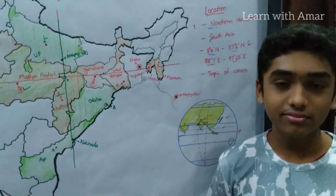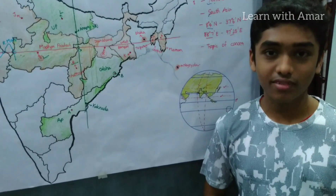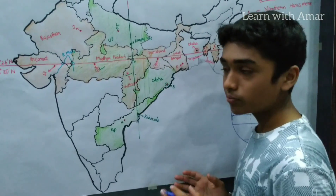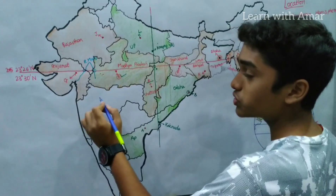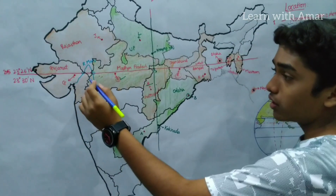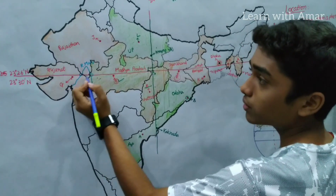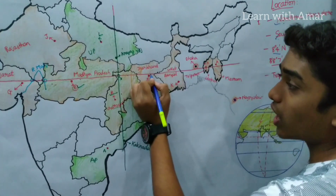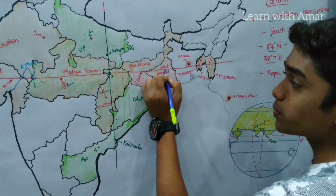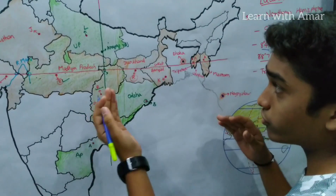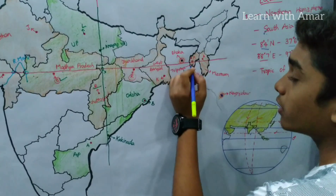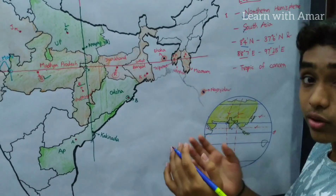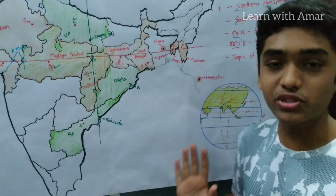How many states are there through which the Tropic of Cancer passes? The Tropic of Cancer passes through 8 states in India, which are Gujarat, Rajasthan, Madhya Pradesh, Chhattisgarh, Jharkhand, and West Bengal — located to the west of Bangladesh — and Tripura and Mizoram, which are located to the east of Bangladesh. So overall 8 states.